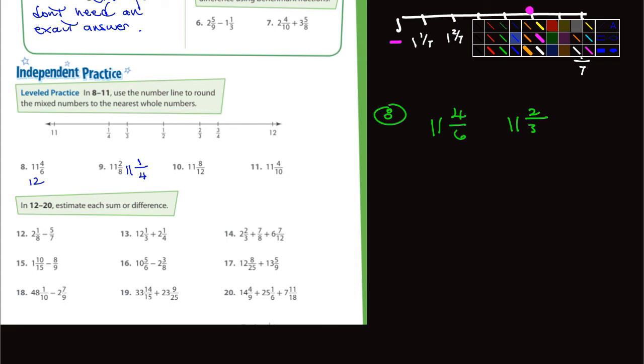And then 12 through 20 here. Estimate each sum or difference. Sum is addition, difference is subtraction. So keep track of that. Look, here's a subtraction problem. There's a subtraction problem. Subtraction problem. Subtraction problem. So those are the four subtraction problems. Don't get those mixed up.